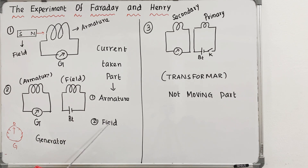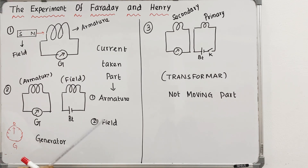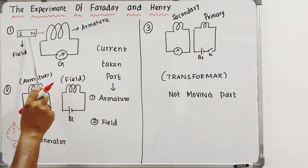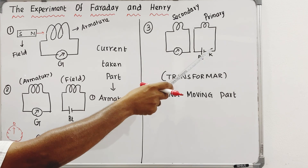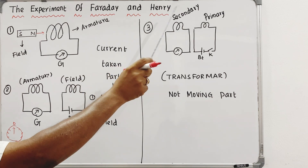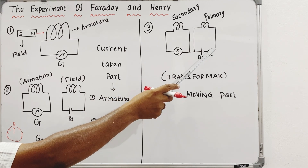The main parts are armature and field. Next, we have a primary and secondary coil setup. We have the current in the primary and secondary. Here we have a battery — we can turn it on.